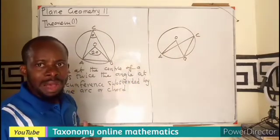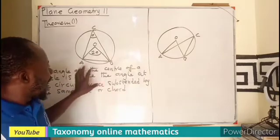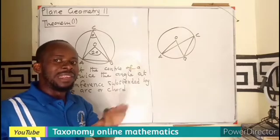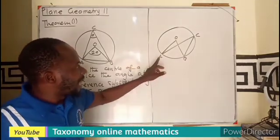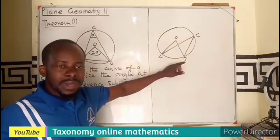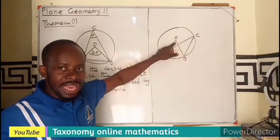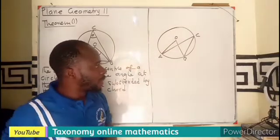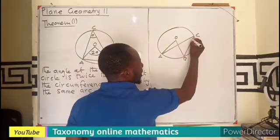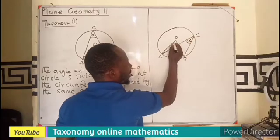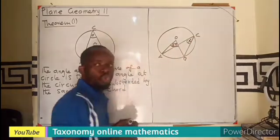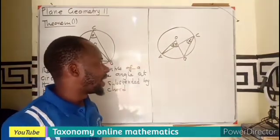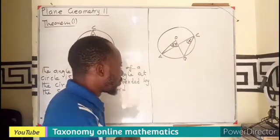What if the circle is in a different form — can the theorem still be applied? The angle at the center is still twice the angle at the circumference subtended by the same arc. Let's check: arc AB forms angle O at the center, and the same arc AB produces angle C at the circumference. So if the circumference angle is X, then the center angle becomes 2X. This is also true.